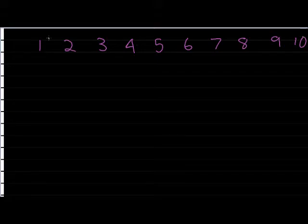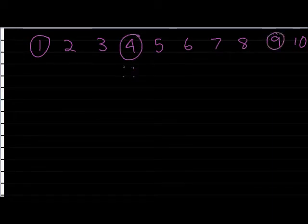1 on its own is a perfect square. Then 4, I could put 2 by 2. And 9, I could put as 3 by 3. Okay, those were my perfect squares.